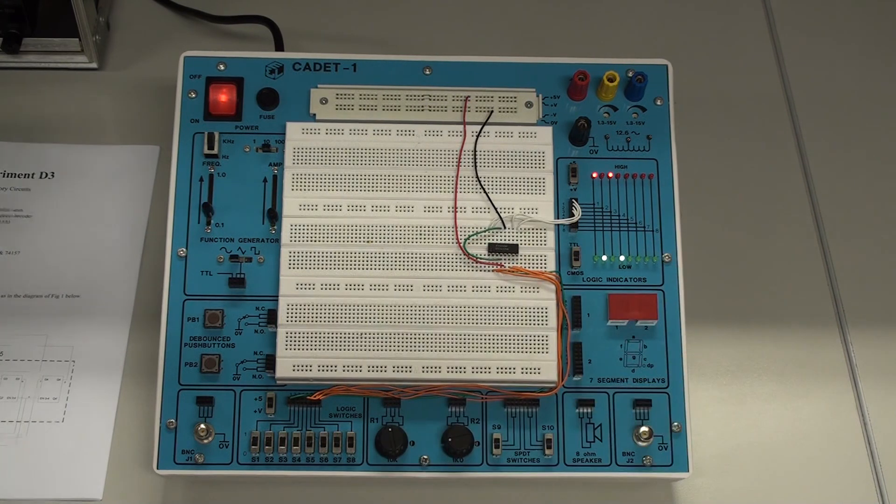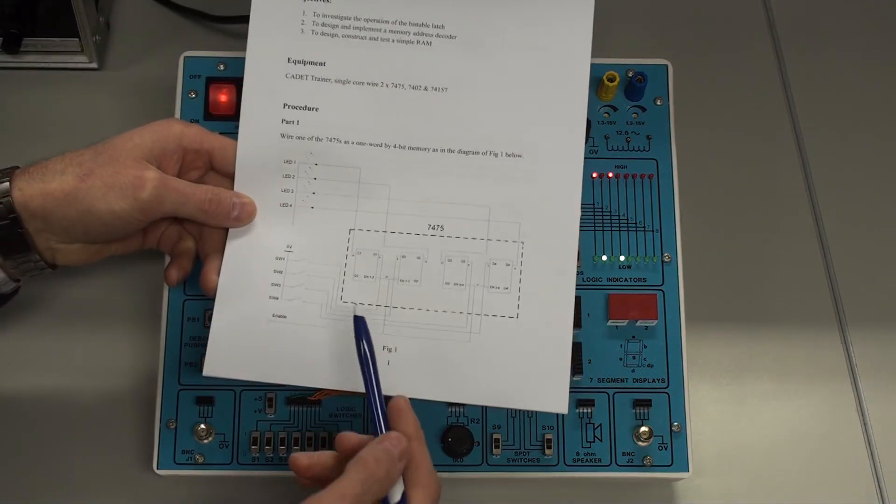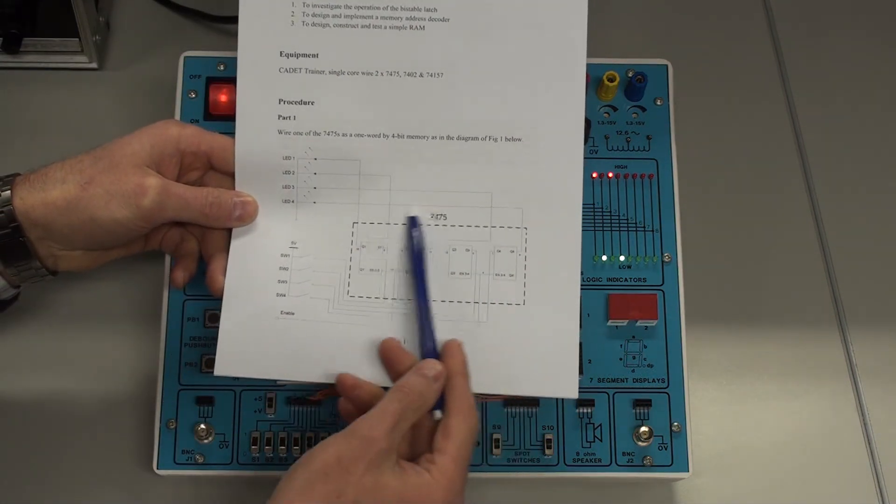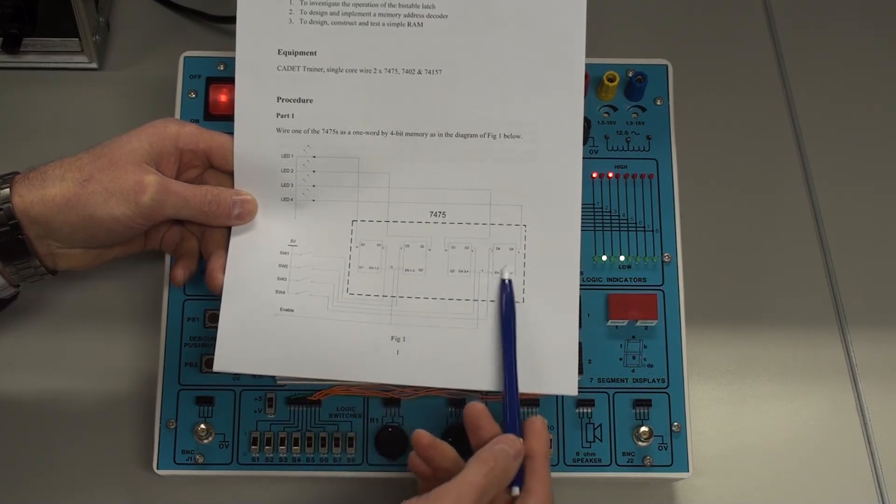Okay. Well, that's experiment D3 part one. Writing to the 7475 D-type, the quad D-type latch.